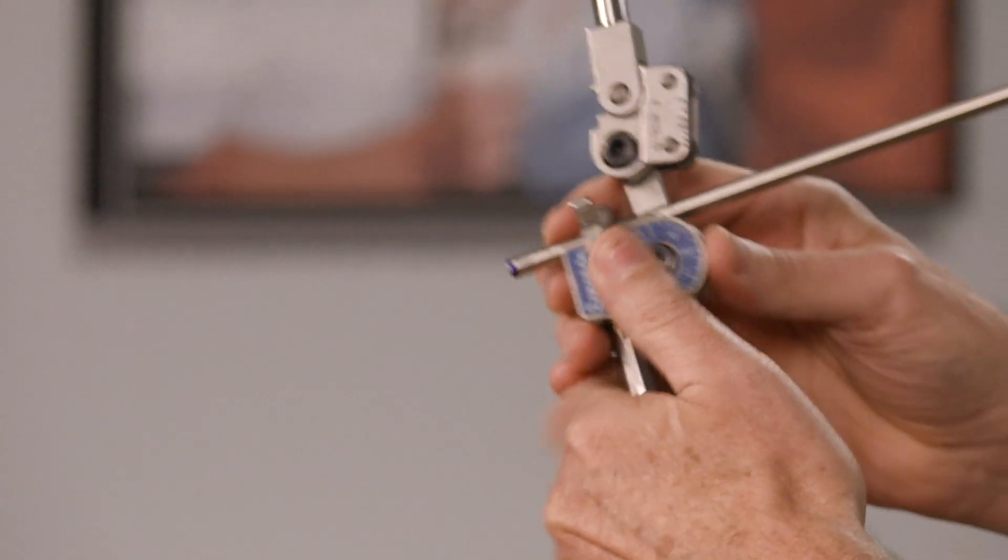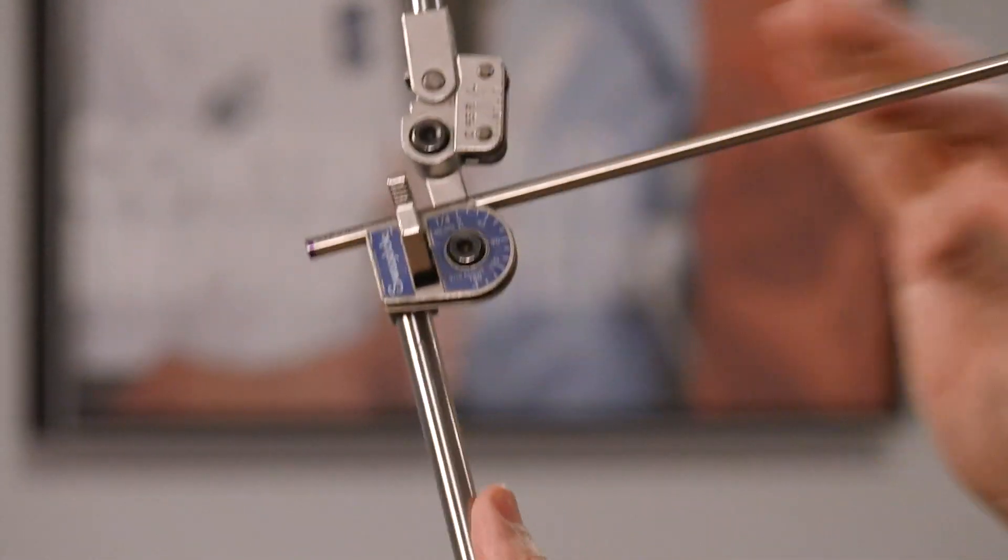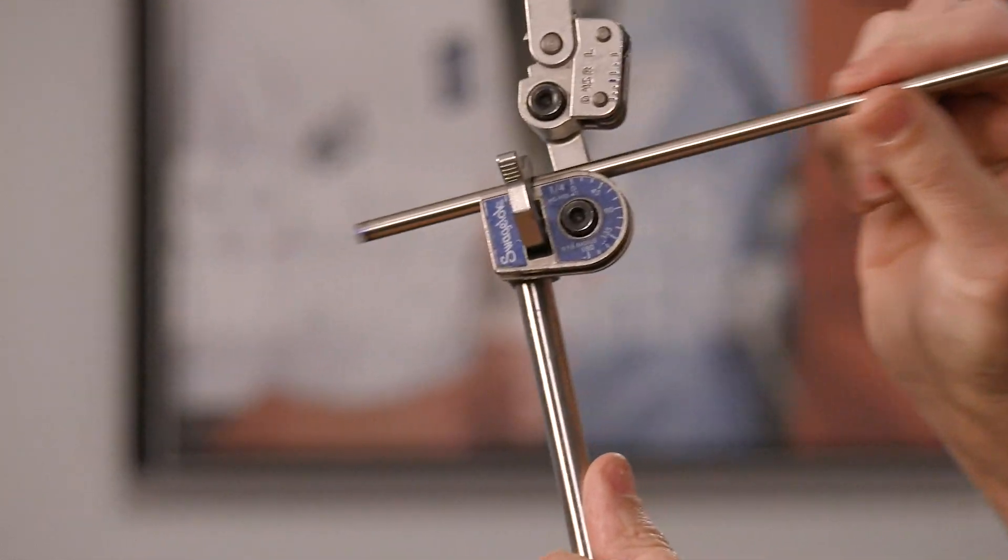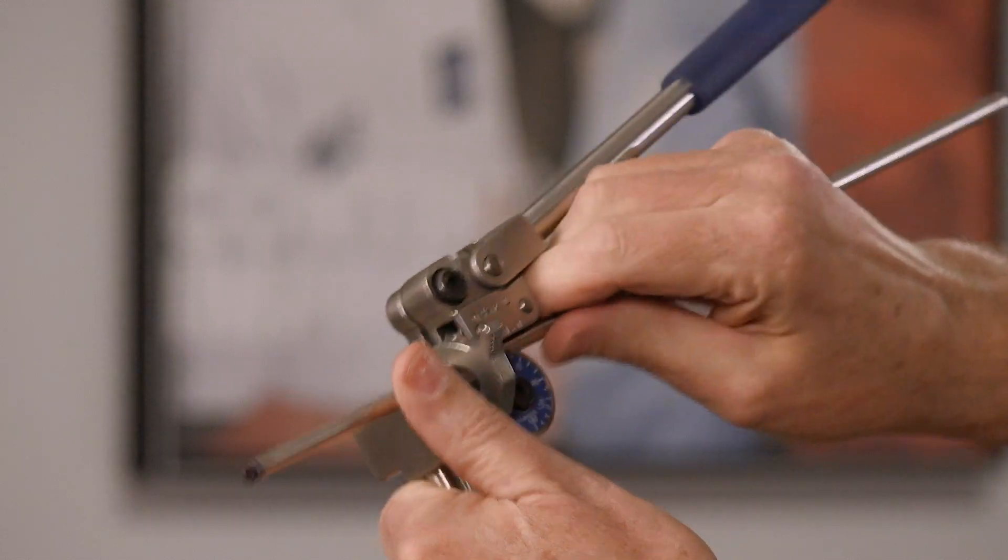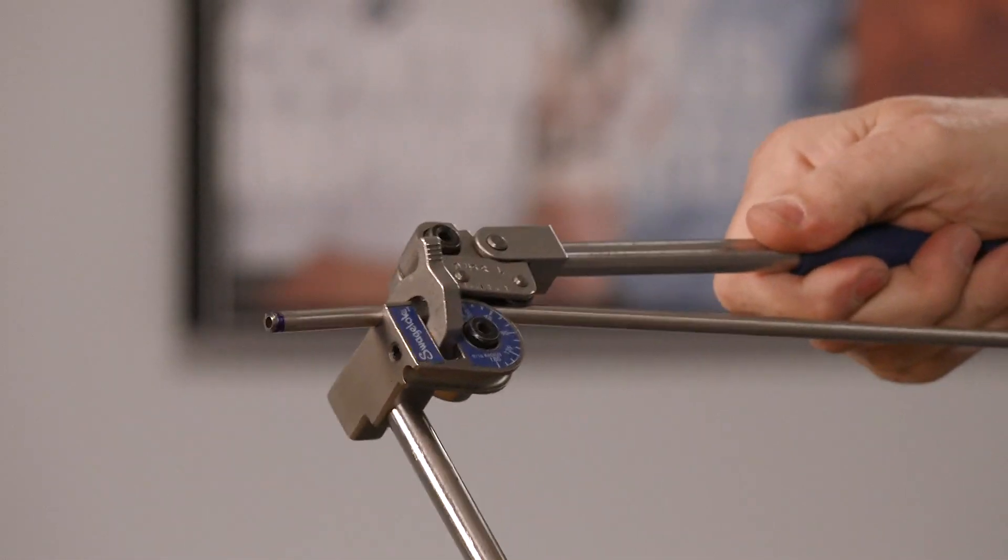There are some great features with this Wedgelock tube bender. This is our clamp that holds things in place. You'll notice that I can actually, if I have this set in here right, I can move the tubing back and forth, slide that back and forth to get it set precisely where I need to make my bend. I'll clamp it down and then I'll go ahead and make my bend. It's very simple to use.